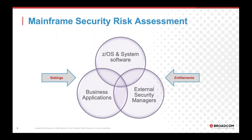Mainframe security risk assessment involves three major areas: the operating system and installed software in your z/OS environment, the external security manager, and the business applications running on mainframe. Assessments are typically focused on two major factors: configurations of the software, and the entitlement risk in your environment. A simple misconfiguration can make an environment vulnerable and lead to serious security exposure. Incorrect access permissions allow a bad actor to take control of your mainframe environment. Settings are typically a one or two-step process using z/OS or ESM commands, but entitlement validations are complex, multi-step processes requiring security SME involvement.